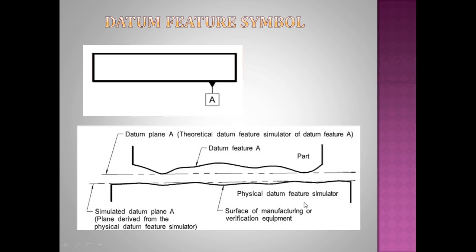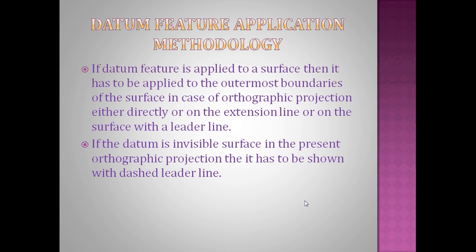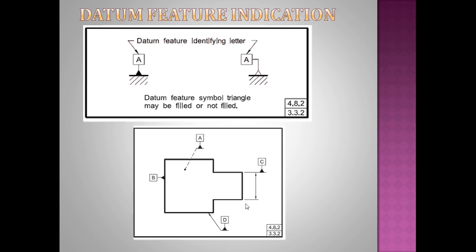So let us go to the next example. Here datum feature is applied to surface, then it has to be applied to the outermost surface. We will see how exactly it is applied. You can observe here if it has to be applied to a surface.